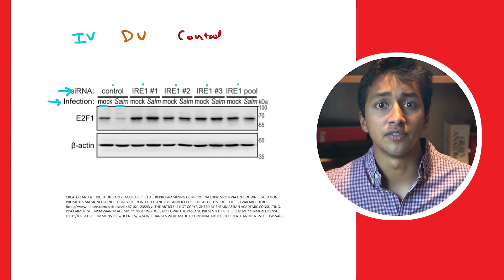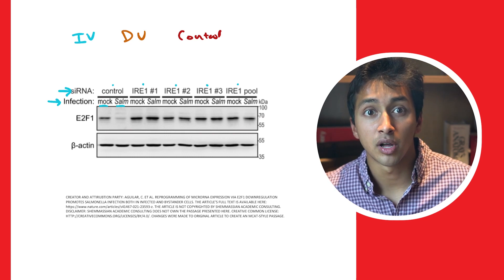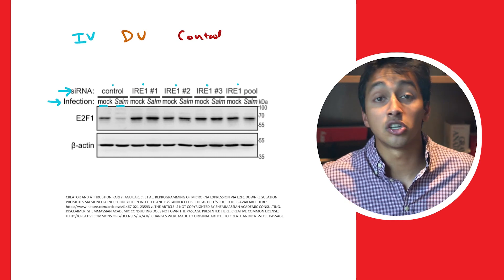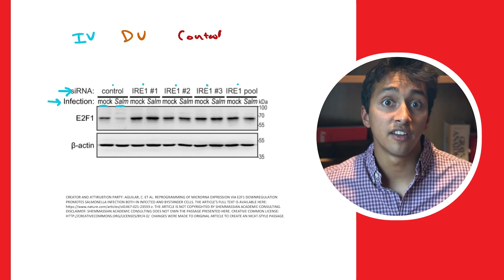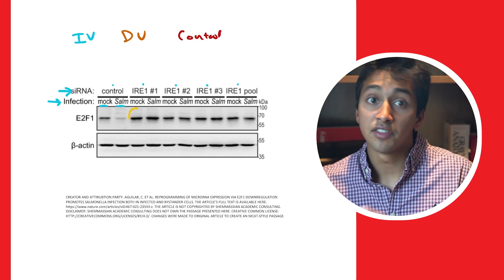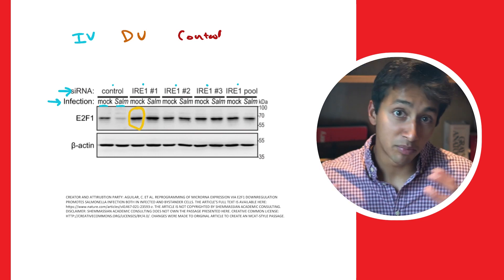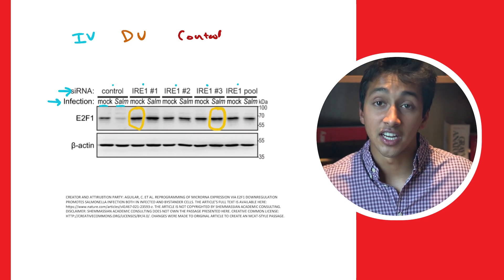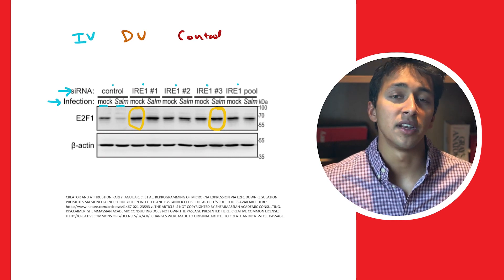The number of combinations of independent variables can quickly become complicated, which is why a Western blot is a convenient way to depict a large amount of information. For example, the Western blot gives us a convenient way of measuring the protein expression of the mock infection in the IRE1 number one condition to the protein expression of the salmonella infection in the IRE1 number three condition.